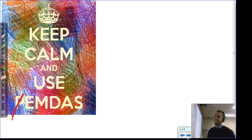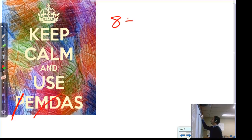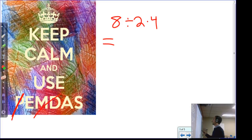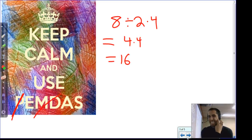Strike two: PEMDAS makes it seem like multiplication always comes before division. Gemma tells us whichever is further left comes first. For example: 8 ÷ 2 × 4. Gemma says division is further left, so 8 ÷ 2 = 4, and 4 × 4 = 16. But following PEMDAS by the letters, you'd do 2 × 4 = 8 first, then 8 ÷ 8 = 1 — way off.